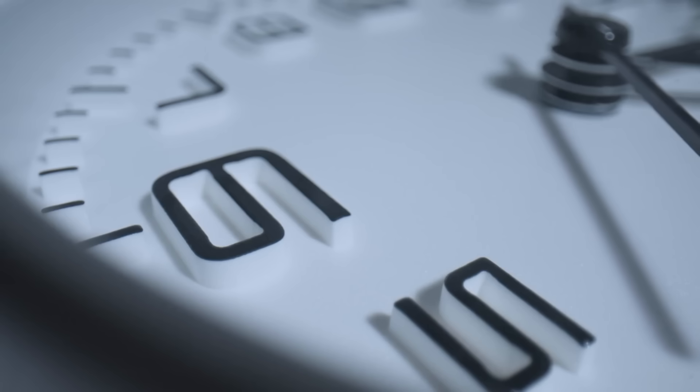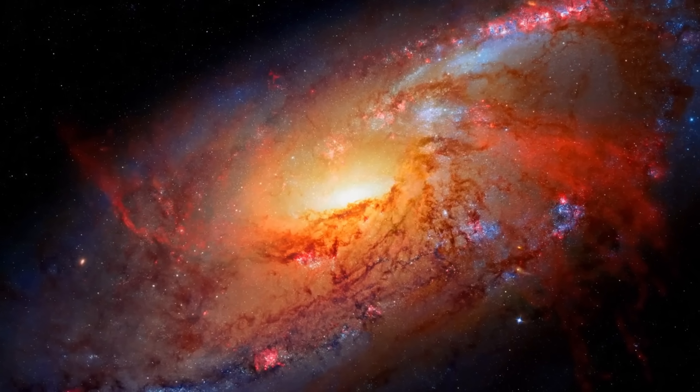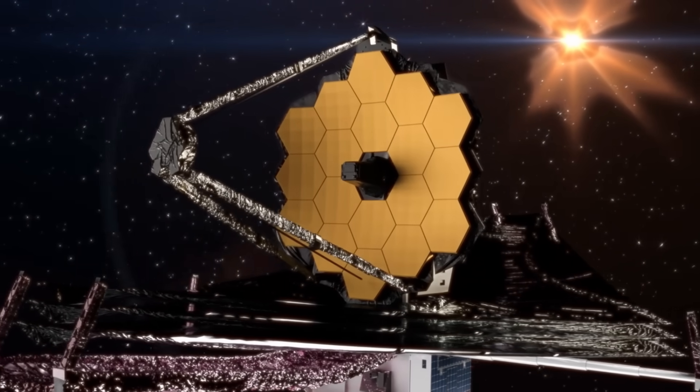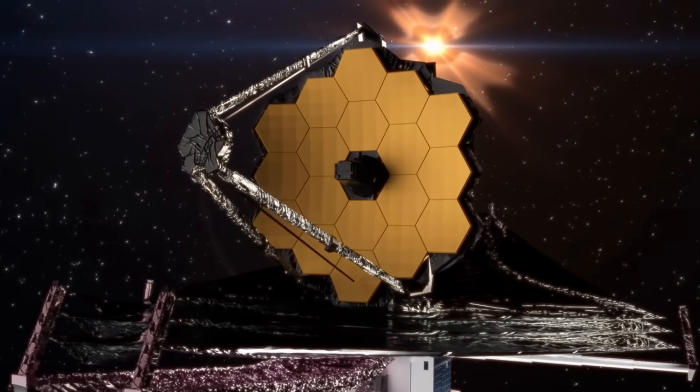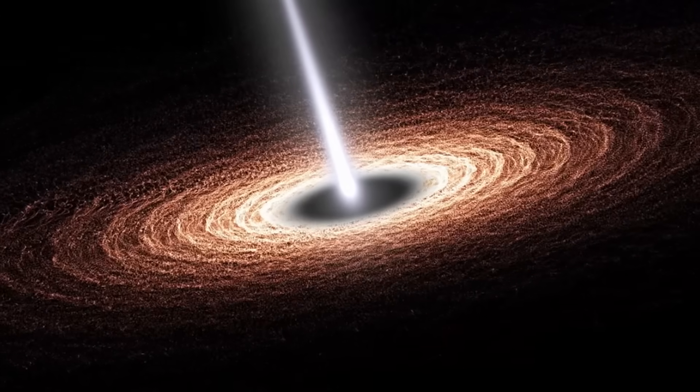Looking out into space is literally looking back in time. The light from our Sun takes eight minutes to reach us, so we always see it as it was eight minutes ago. The light from the Andromeda Galaxy takes two and a half million years. The Webb Telescope pushes this time travel to its absolute limit, seeing light that has been traveling for over 13 billion years.